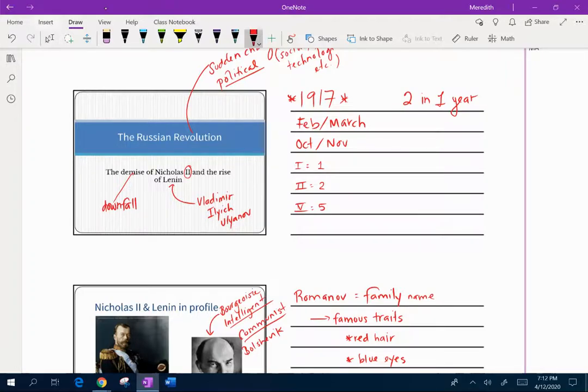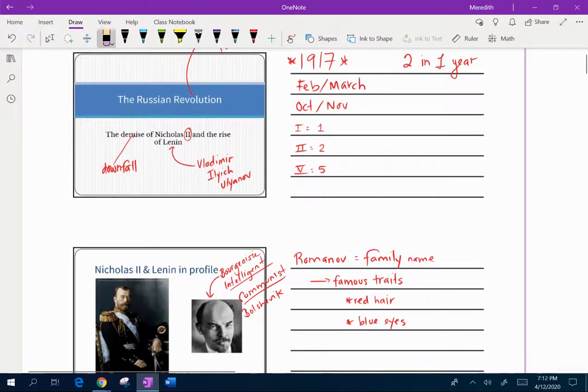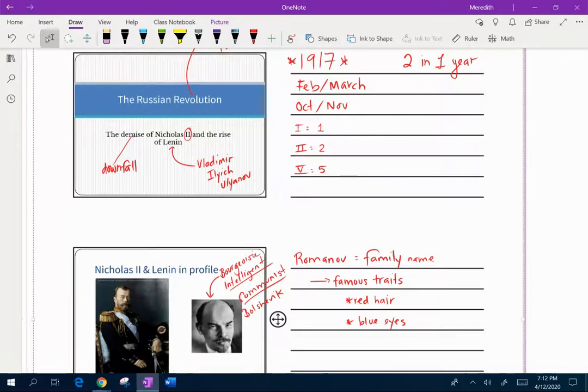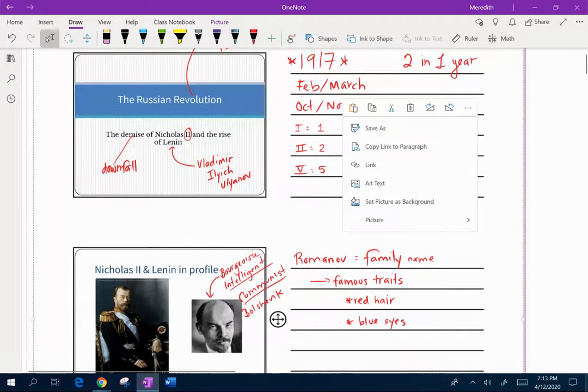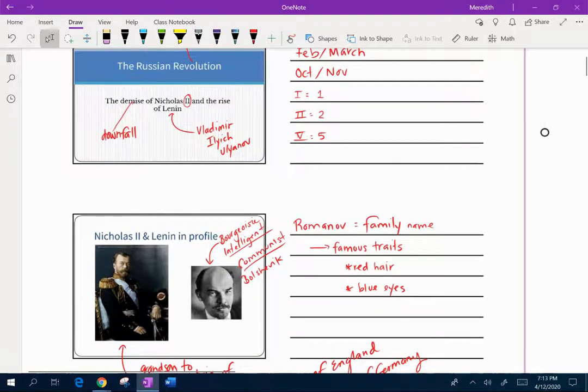Over here on the side, I've got the year 1917 in asterisks. Super, super important. I also want to let you guys know that there are two Russian revolutions that happened in a one-year period. It happens in February and March of 1917, and then there's a second revolution that happens in October and November of 1917. It's because Russia at the time was using a different calendar than the rest of the world.